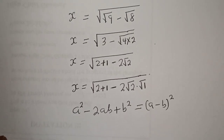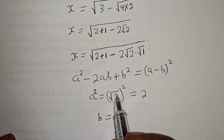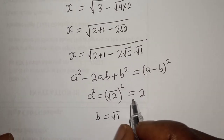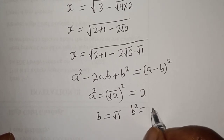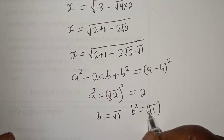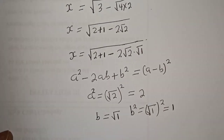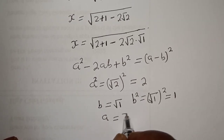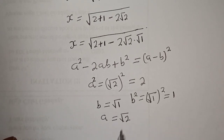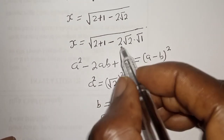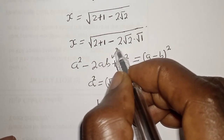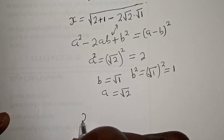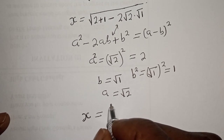Here, a squared is equal to 2, so a is equal to square root of 2. And b squared is equal to 1, so b is equal to square root of 1, which equals 1. Now, a is equal to square root of 2. Substituting, we can see that this expression is equivalent to the perfect square pattern, which gives us a minus b, all squared.